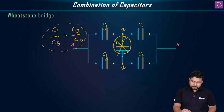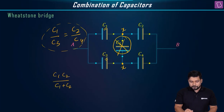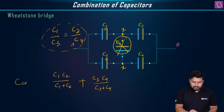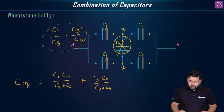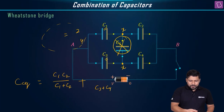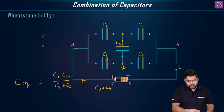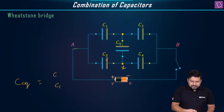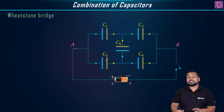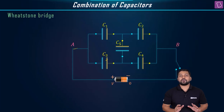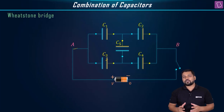With C5 removed, you have a simple circuit: C1 and C2 are in series, giving C1·C2/(C1+C2), and C3 and C4 are in series, giving C3·C4/(C3+C4), and both of them are in parallel — that will be the value of C equivalent. The method to prove this is by using Kirchhoff's laws. We will deal with Wheatstone Bridge again when we come across resistances in current electricity; we are just talking about it in the context of capacitors right now.